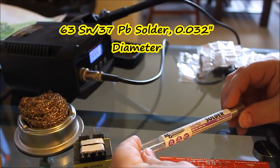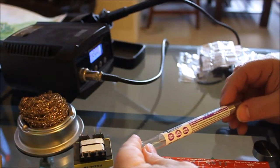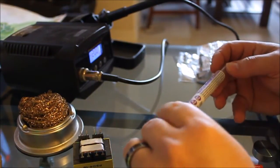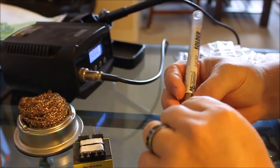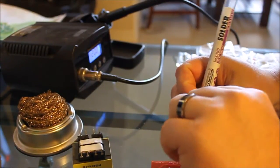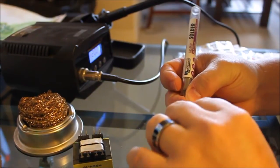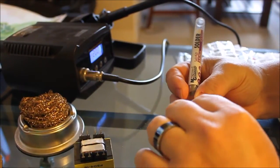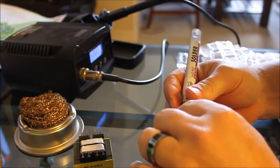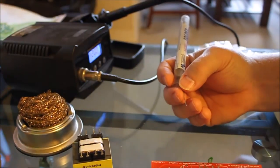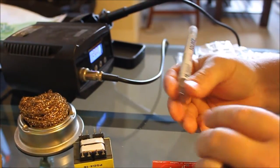This is 63/37 solder. It contains 63 percent tin and 37 percent lead. This particular solder has a diameter of 0.032 inches. I actually prefer something slightly smaller because many of the parts we use are very small. This is a small one ounce tube from our supplier and our friends at Circuit Specialists. It's just basically a tube. Normally it has a little cap with a hole on top of it.